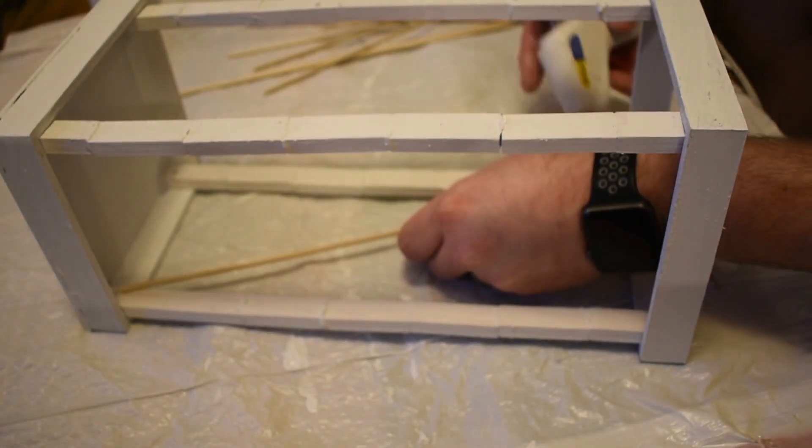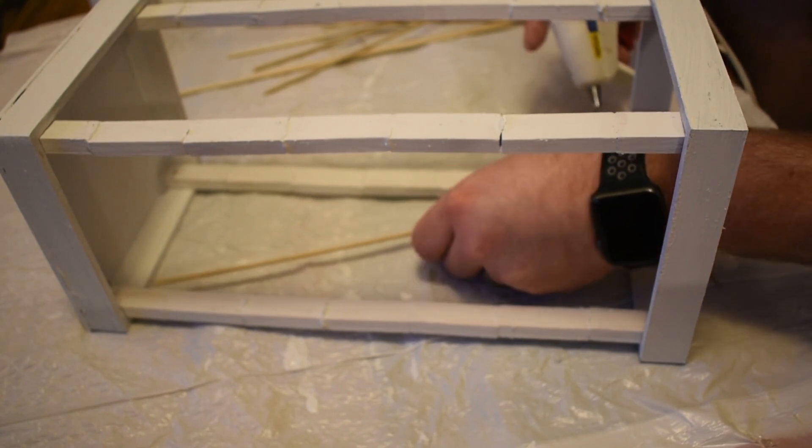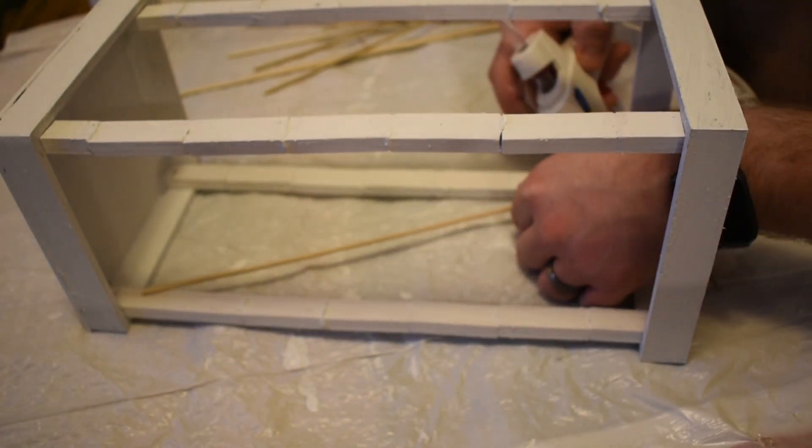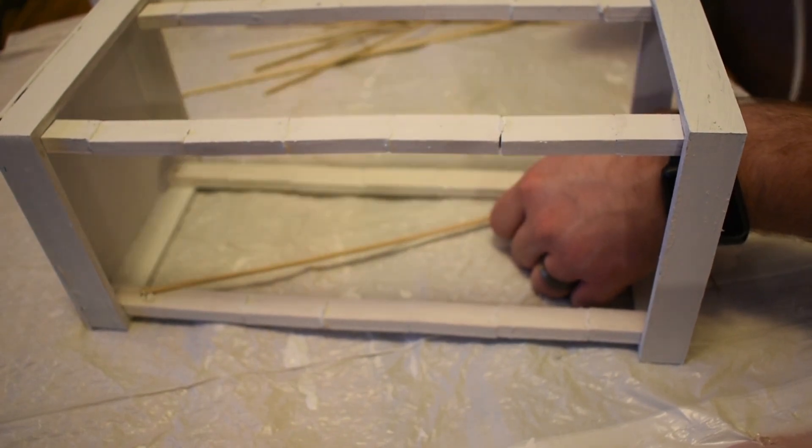Next up, you're just going to take your skewers and you're going to put them on the inside of your lantern. You're going to do them in an X formation on each side of the lantern, and you'll just attach it using hot glue.